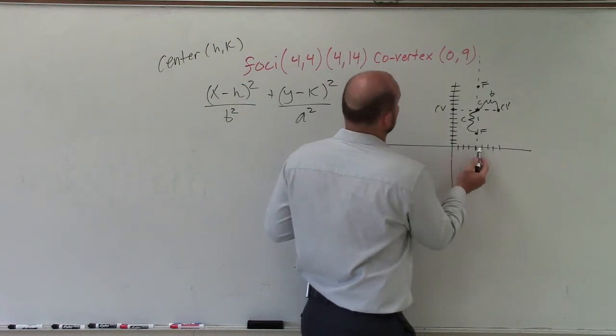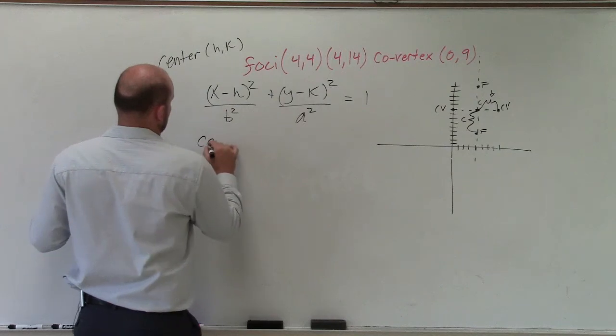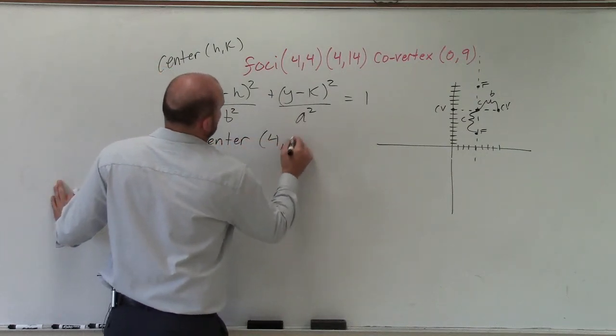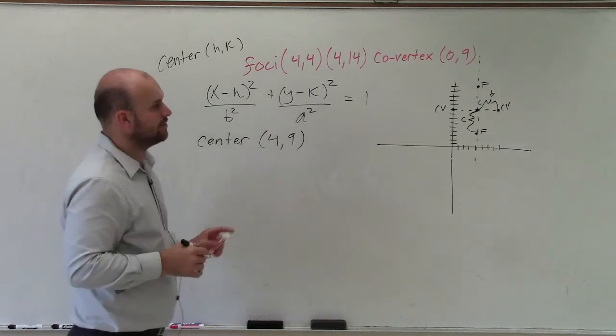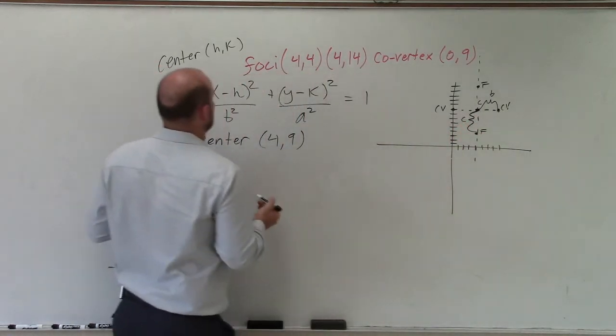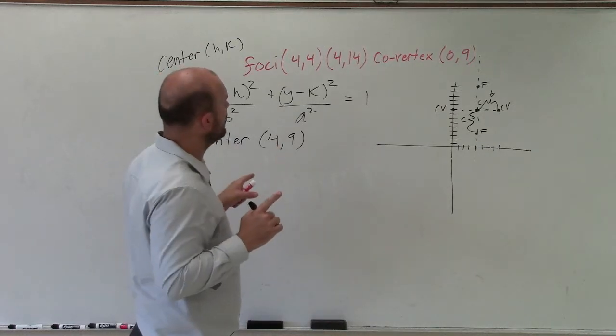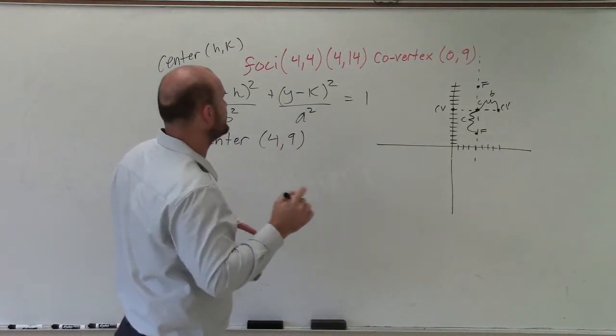So I'll say center is at (4,9). That's the x and the y-coordinate for my center. The value of b, the distance from the center to one of my co-vertices, is going to be 4.